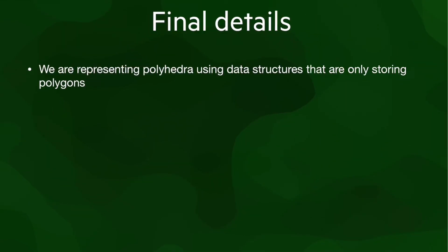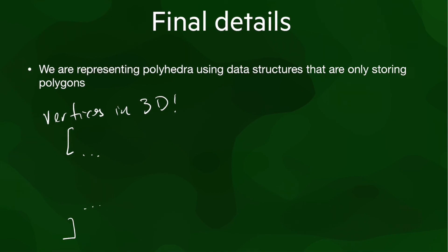Let's finish the lesson by taking note of a couple of important aspects. Up to this point, because we are using boundary representation, we have been using data structures to represent objects only up to 2D: vertices, line segments, and polygons. So, in order to actually store polyhedra using BRep, we store the polygons that bound them with one key difference: we store vertices with their 3D coordinates. This is known as embedding vertices in 3D space, as opposed to embedding them in 2D space.